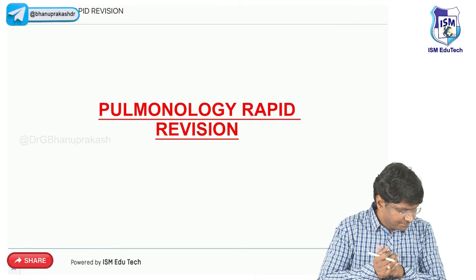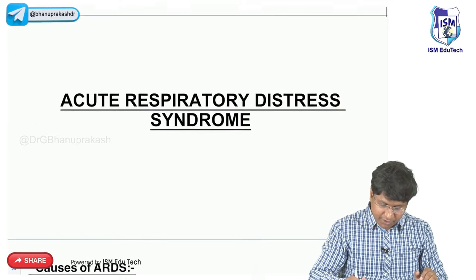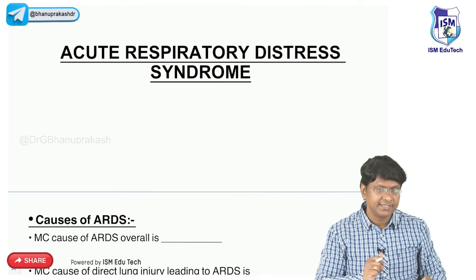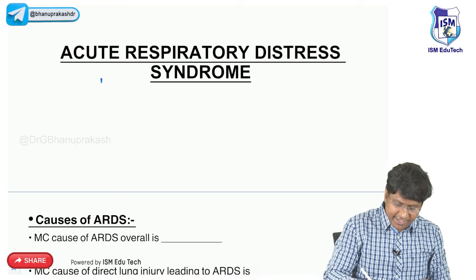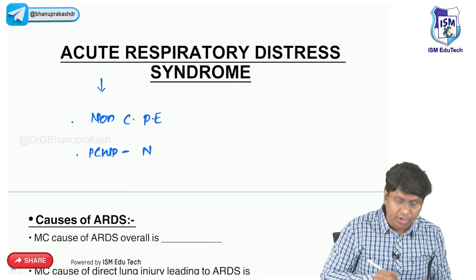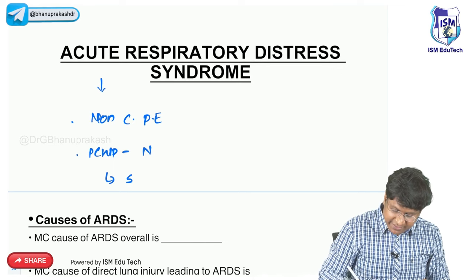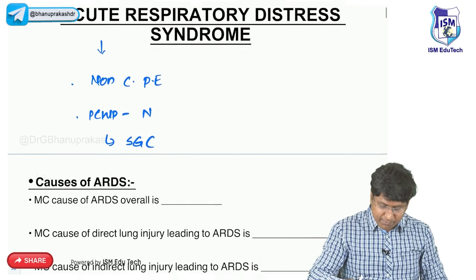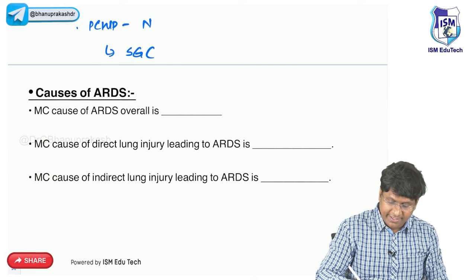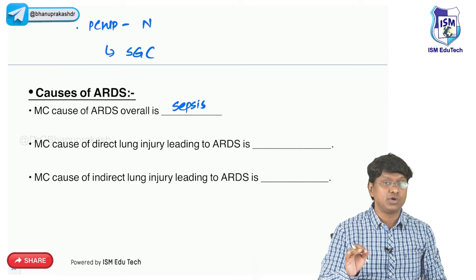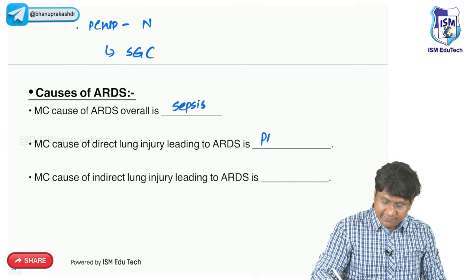In this pulmonology quick revision, the first important topic is ARDS - acute respiratory distress syndrome. A very important point about ARDS is that it is non-cardiogenic pulmonary edema. That means pulmonary capillary wedge pressure will be absolutely normal, and you measure it with the help of Swan-Ganz catheter. The most common cause of ARDS overall is sepsis, and the most common cause of direct lung injury causing ARDS is pneumonia.